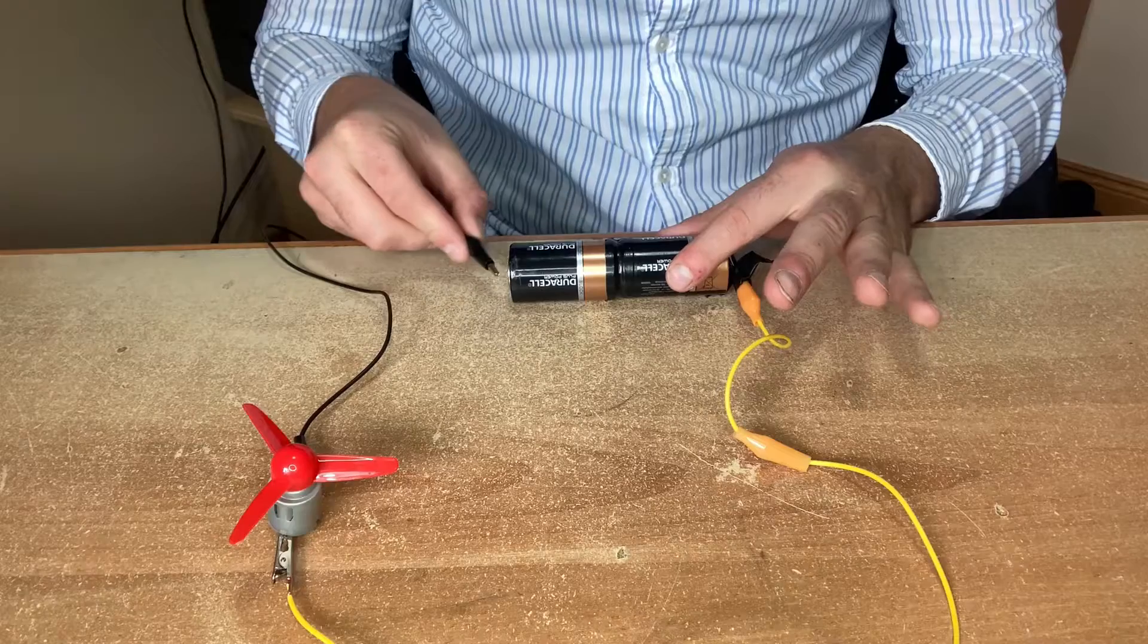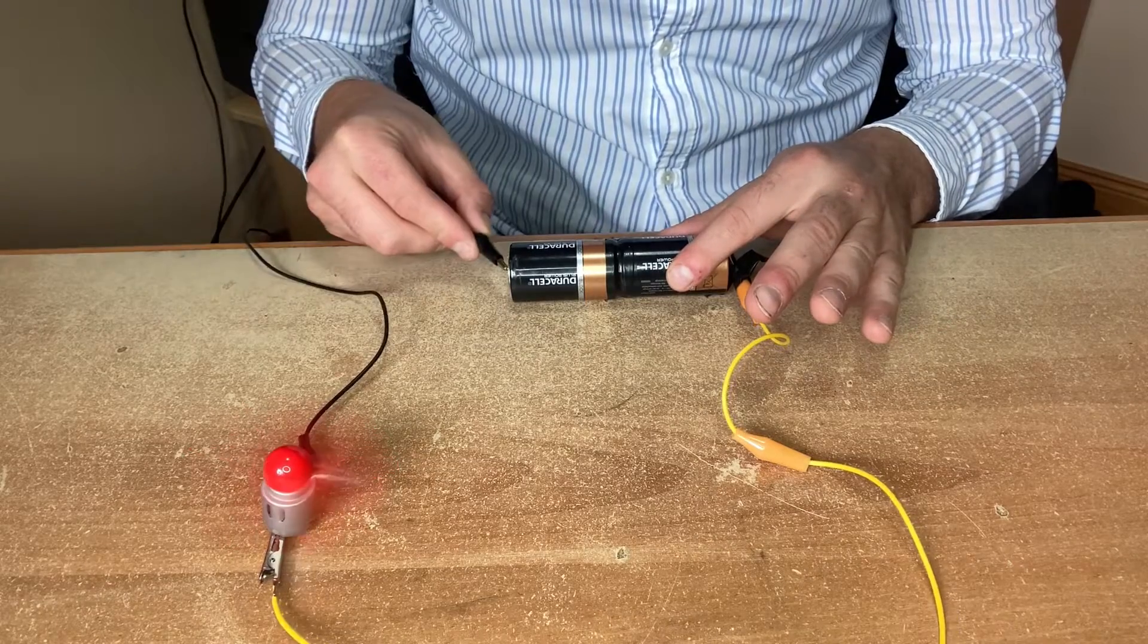This little guy is called a motor. When I add the motor to the circuit it will spin round and round. We can use these motors for things like electric drills, blenders and spinning toys.